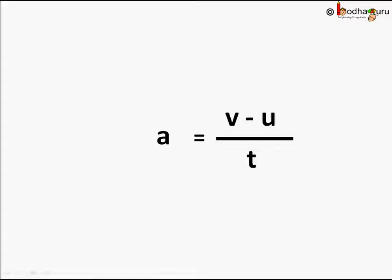So a is equal to v minus u divided by t. From this equation we get v is equal to u plus a into t. So we use this formula to find final velocity v given initial velocity u, acceleration a and time taken t.